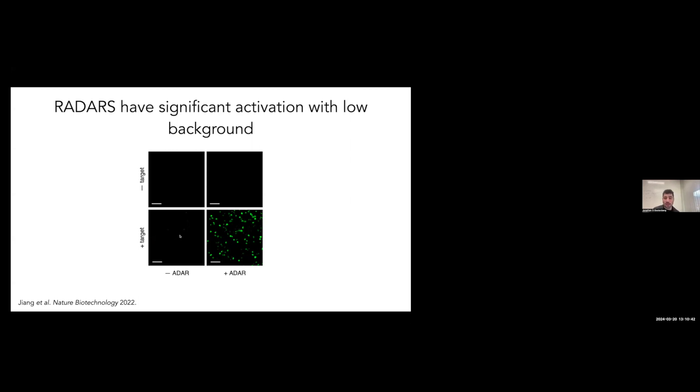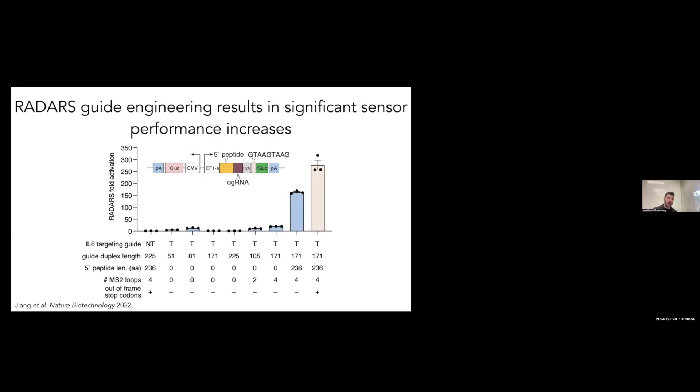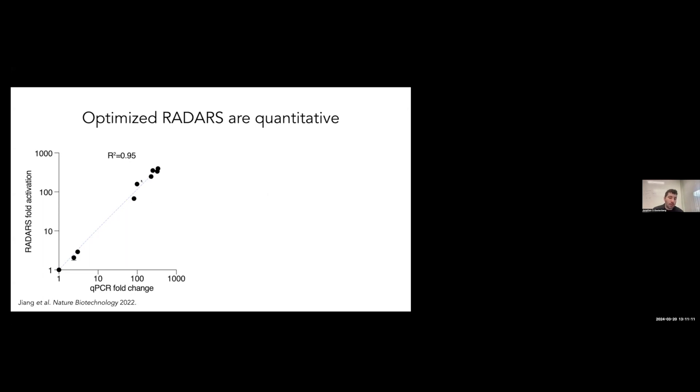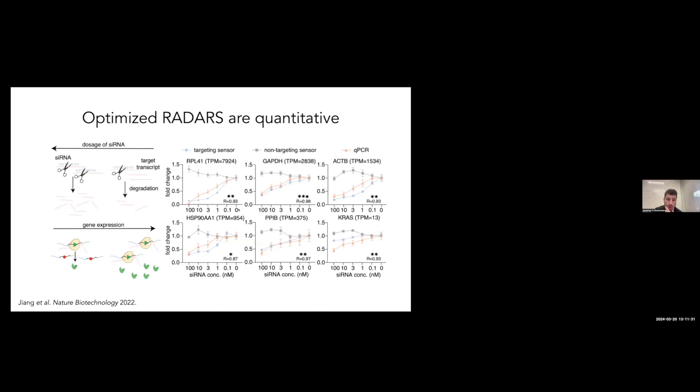This works quite well. We can actually see both in the absence of supplemented ADAR and the presence of supplemented ADAR, which makes it much stronger, we have a strong differential with very little background. We can go on a campaign to improve this technology where we did multiple different optimizations, including the guide duplex length and including an upstream peptide that allowed us to get over 250-fold activation from absence to presence of transcripts. This is actually quantitative. If we compare it to transcript levels, we can induce different levels of transcripts using an inducible expression system. We can see that the RADARS activation actually matches the qPCR very well. We can also do this on endogenous genes by using siRNA dosing—siRNA up and titrating gene expression down. We can see over many different genes when we increase the siRNA going this way, we reduce the expression of the gene by qPCR, and we also reduce the expression gene by our RADARS measurement. So we can track the expression very well.